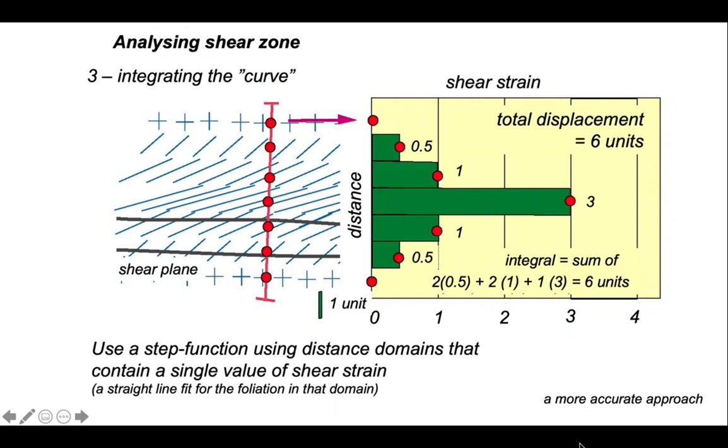So actually, this is quite a good way to work by dividing the shear zone profile into a series of segments or domains within which you fit a straight line to represent the orientation of the shape fabric of the foliation. You can then very quickly plot the graph. And that is a very easy thing to integrate to find the total displacement, as you can see on the diagram.